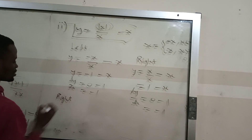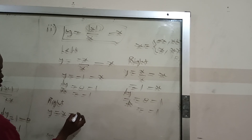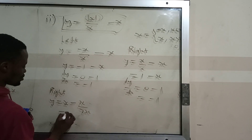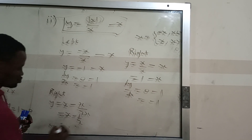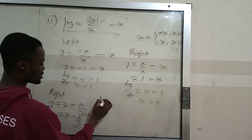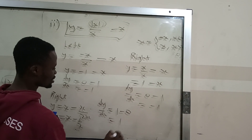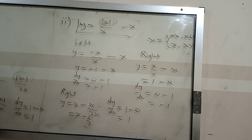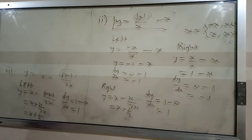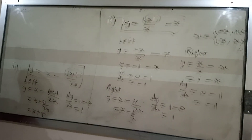For the right hand side, we substitute positive x, so we get y equals x minus x over 2, which simplifies to x minus 1/2. Finding dy/dx gives 1 minus 0, which equals 1. The left hand side differentiation is the same as the right hand differentiation. So this function is differentiable. Thank you very much.